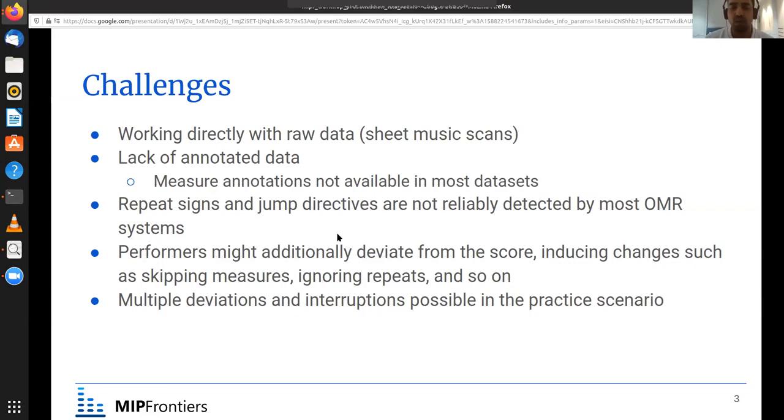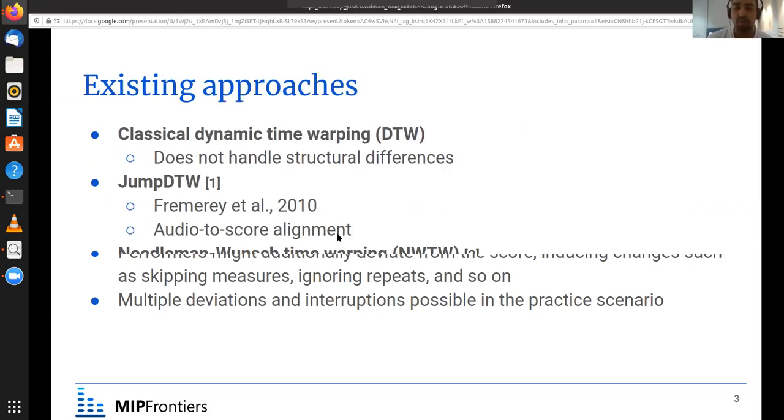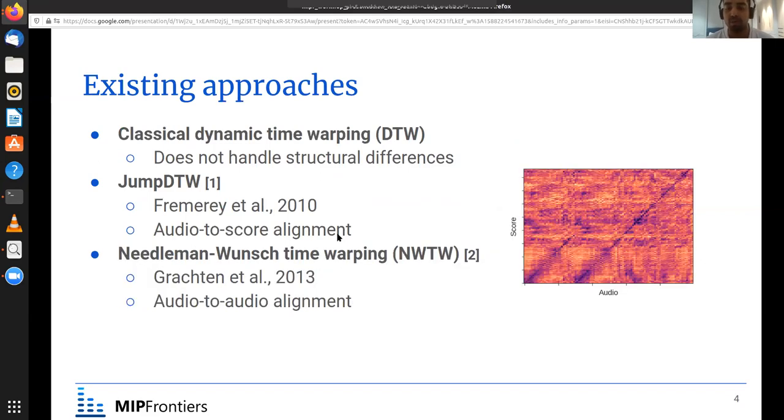So now we'll quickly talk about the existing approaches. There have been quite a few approaches to tackle this task and we won't talk about all of them due to time constraints, just the main ones. This image on the right side is just to show how the distance matrix looks for a performance where there is a single repeat section. The classical dynamic time warping algorithm does not really handle structural differences since it computes a monotonically increasing alignment path.